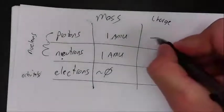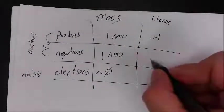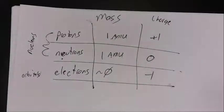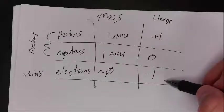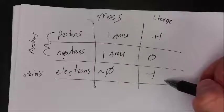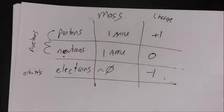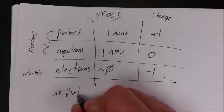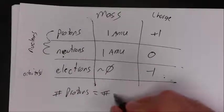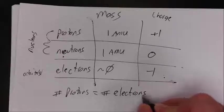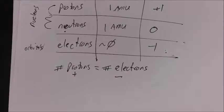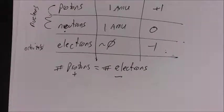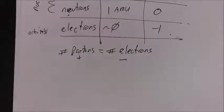Charge: protons have a charge of plus one. Neutrons are neutral, they have zero charge. And electrons have a charge of minus one. The protons and the electrons are equal but opposite in charge. Now in an atom, the number of protons is equal to the number of electrons. The pluses and the minuses cancel each other out to make a neutral atom.